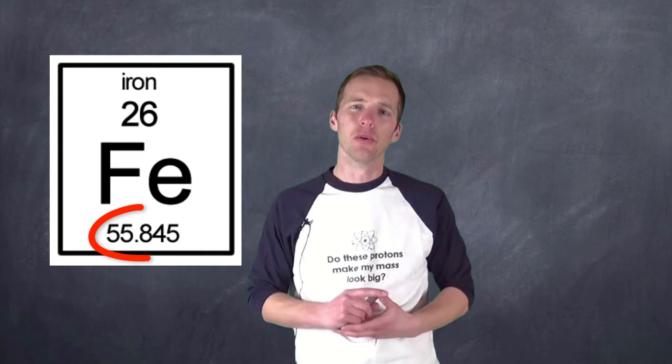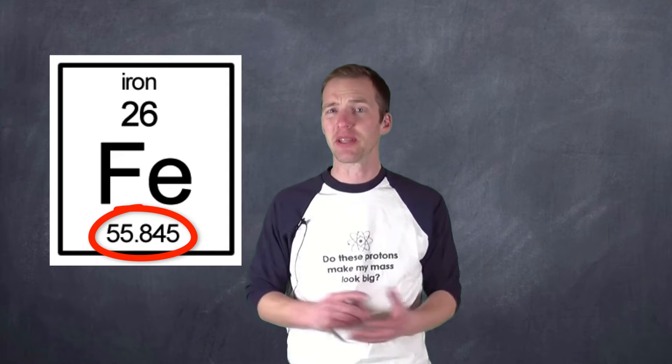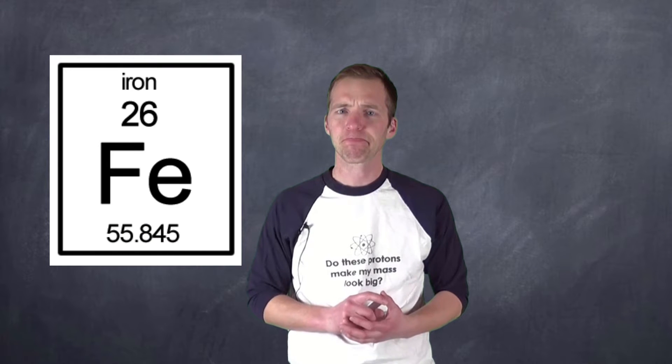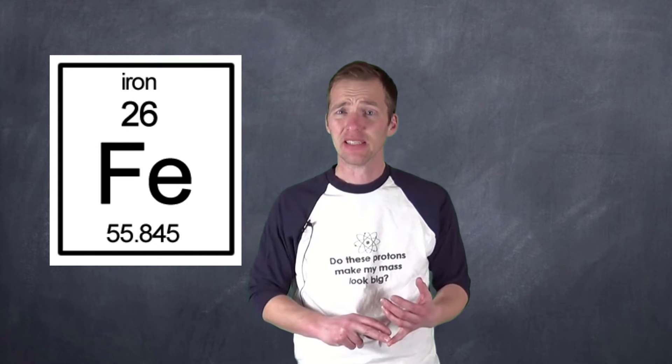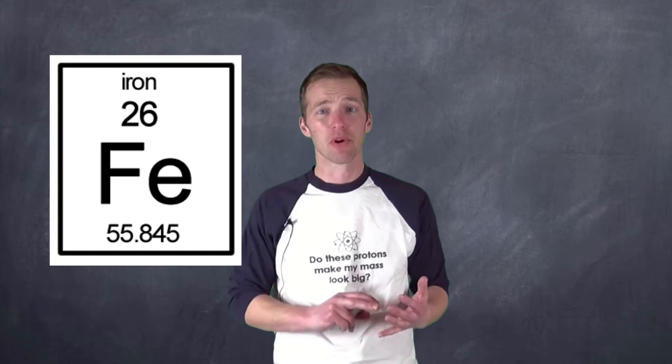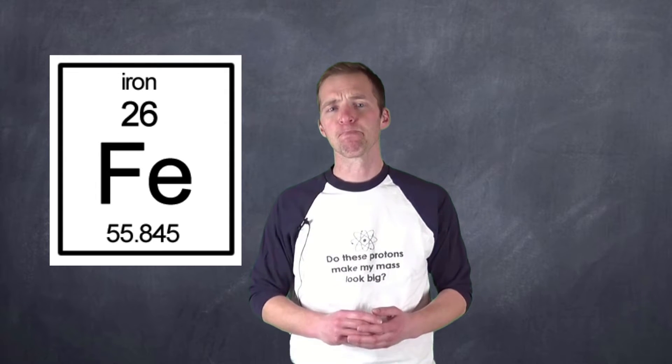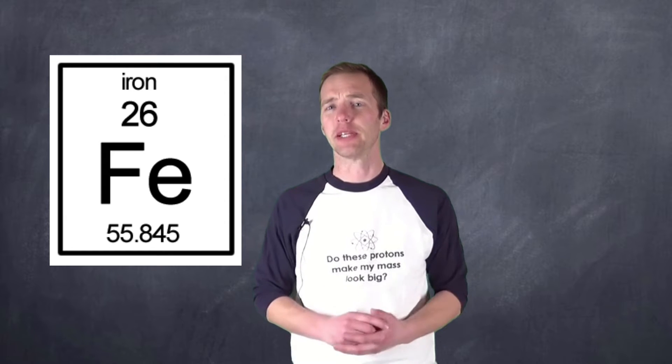But if we take a look down below, and we take a look at what we assume is the mass number, there's decimals there. Well, if that number is representing the mass number, which is the number of nucleons, protons and neutrons, that are in a particular element, how can we have decimal places?